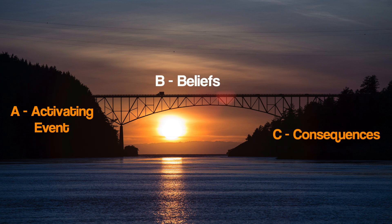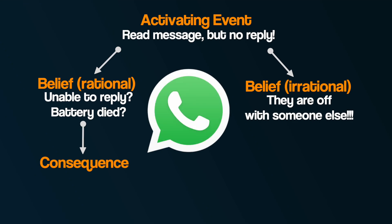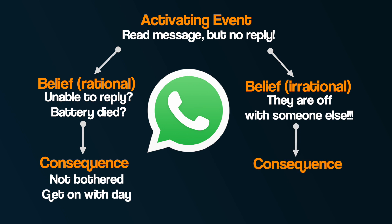If our thoughts are rational, according to Ellis, then we have good mental health and our emotions are healthy. For example, when they don't get the WhatsApp reply, it doesn't bother them all that much — they just get on with their day. Whereas for the sufferer of depression, the consequences of irrational thoughts are unhealthy emotions: symptoms such as lowered mood, feeling lonely, down, and unmotivated, as well as low self-esteem. They might start criticising themselves in terms of how they look and act. They're depressed.